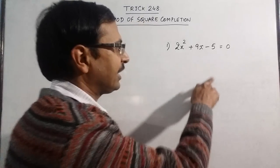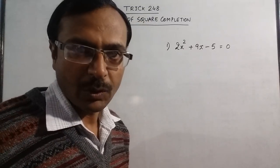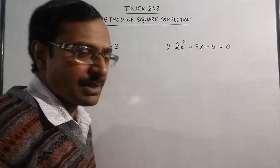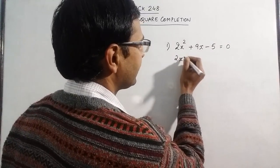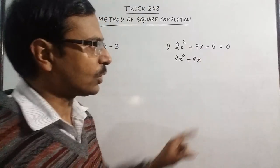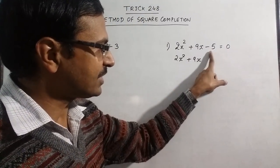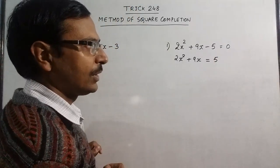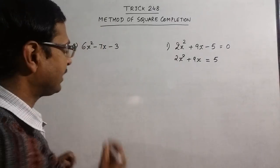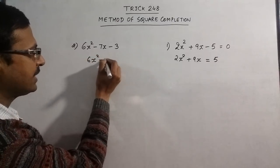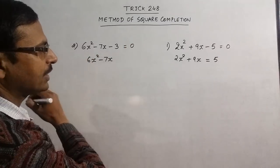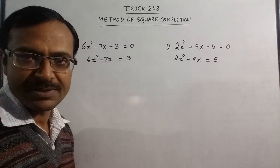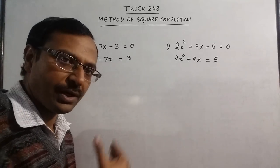The first quadratic equation is 2x² + 9x − 5. The first step is to transfer the constant term — here the constant term is −5 — just shift it to the right-hand side, so it becomes +5. Similarly, for 6x² − 7x − 3, the −3 shifts to the RHS and becomes +3. So the first step is to shift the constant term to the RHS.